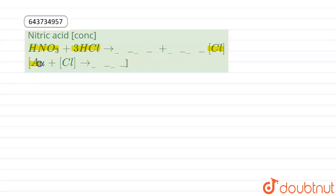The combination of one mole of concentrated HNO3 with three mole of concentrated HCl is called aqua regia or royal water. This mixture is used to